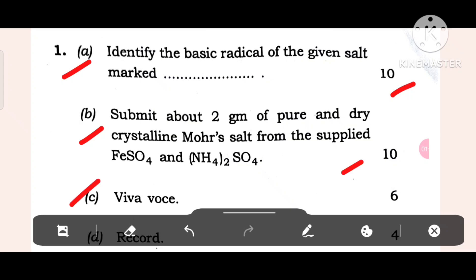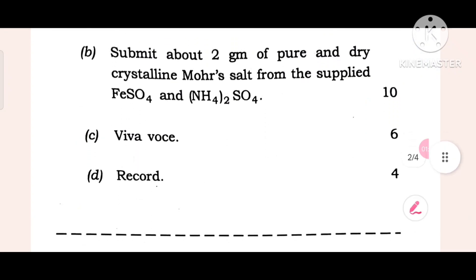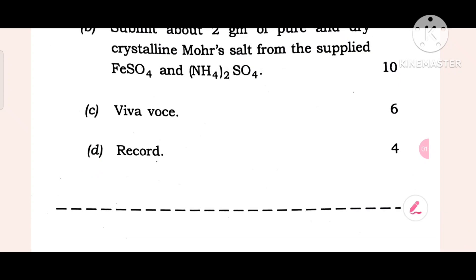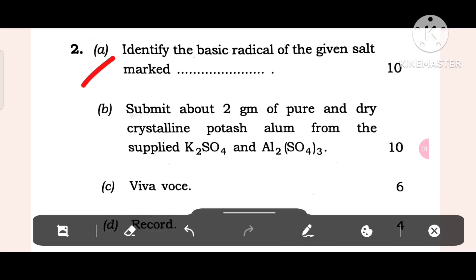Mark distribution: 6 marks for one part, 4 marks for another. Question 2: Identify the basic radical of the given salt. Submit about 2 gm of pure and dry crystalline potassium salt from the supplied K2SO4 and L2SO4. 3 marks plus another mark distribution applies.